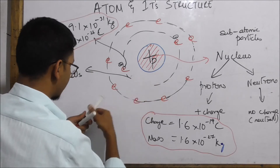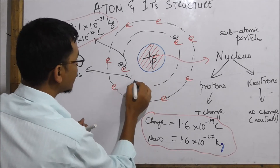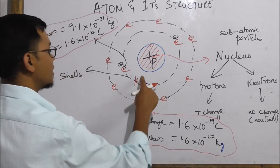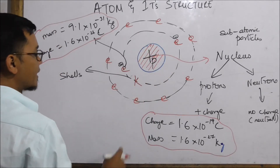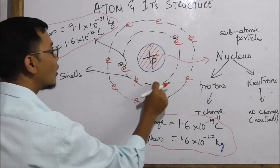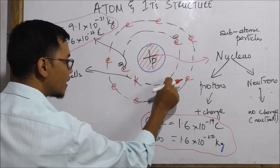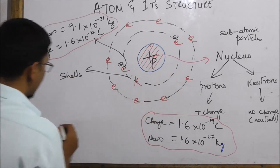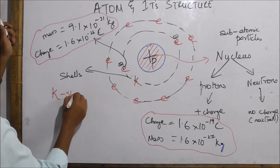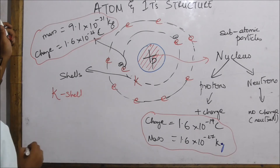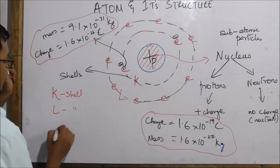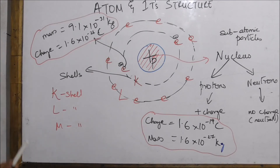The electrons orbit the nucleus in shells. The first shell is called the K-shell, the second is the L-shell, then the M-shell, and so on.